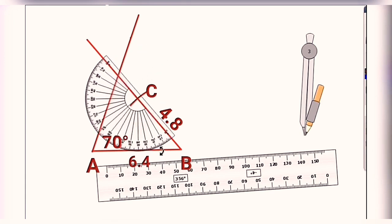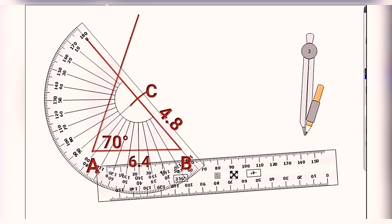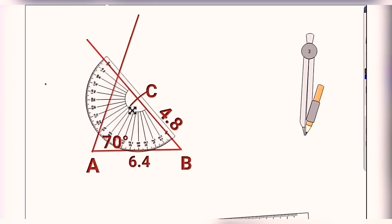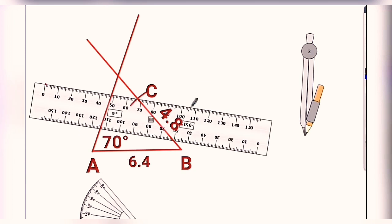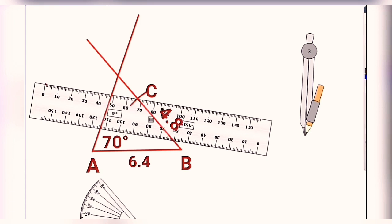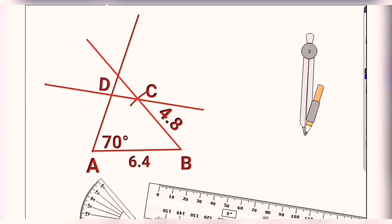Keep the protractor so that the reference line matches BC. Since B is on the downward side, count from downward zero towards the B side. Mark where 140 degrees falls. Join that marked location of 140 degrees to vertex C. The moment you join it, you will observe it intersects with the ray from angle A, and that intersection is vertex D. In this manner, the diagram is completed by locating point D.